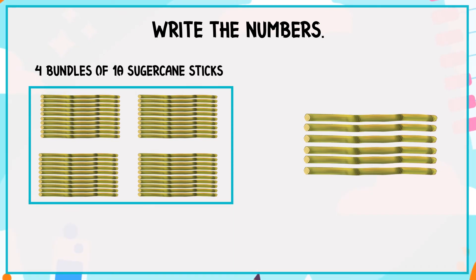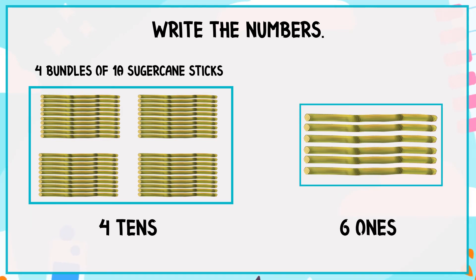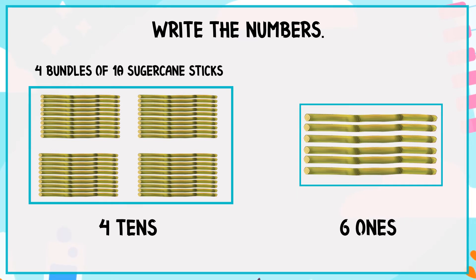So, 4 tens and 6 ones. So, 4 tens and 6 ones is equal to 46.